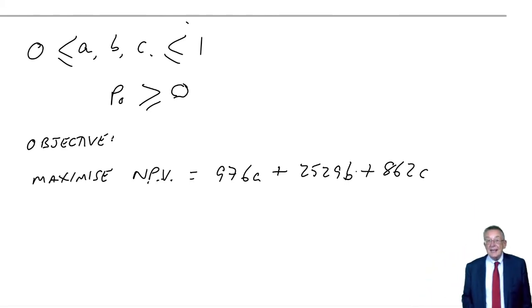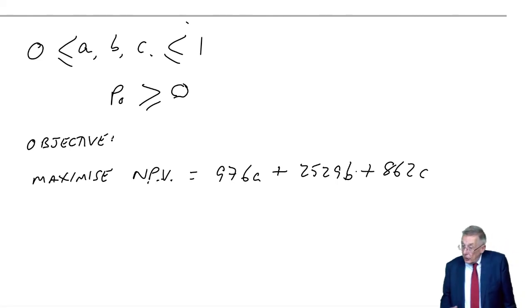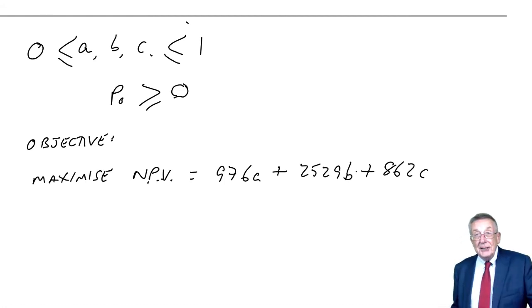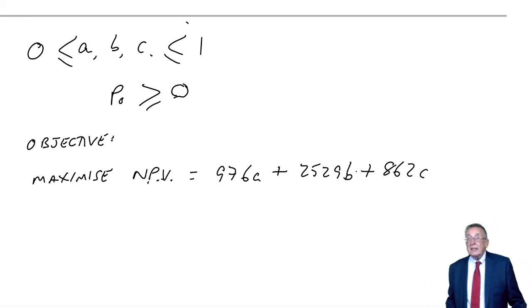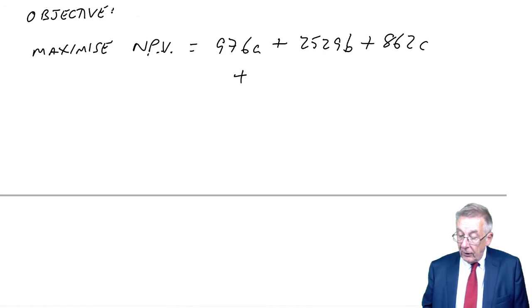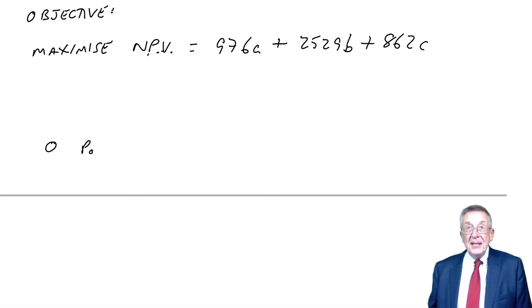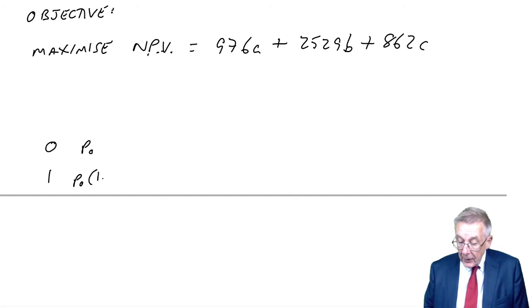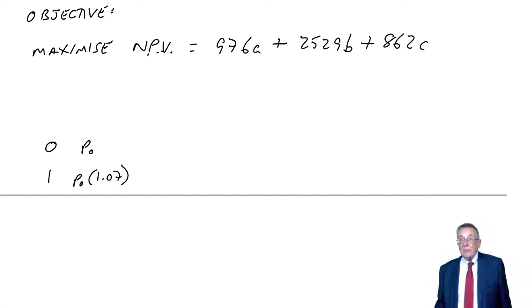But one extra thing. Remember, there was, could have been, potentially an extra investment. In that at time zero, we put P0 on deposit. And we get back at time one, P0 together with interest. So what's the net present value of that, before I finish this off? At time zero, we put P0 on deposit. At time one, we get back P0 together with interest. It's like an extra investment. What's the net present value of it?